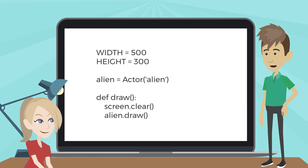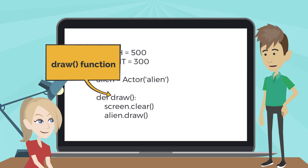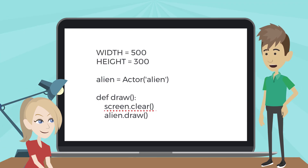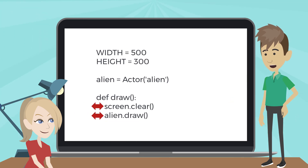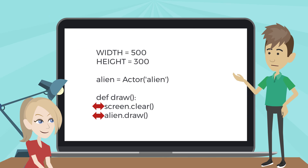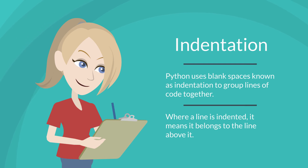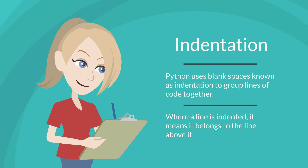What is this code doing? To draw the alien on the screen, we can use a built-in PyGame Zero function called the draw function. This clears the screen. This line draws the alien on the screen. Remember, we need four blank spaces here. Python uses blank spaces, known as indentation, to group lines of code together so the computer knows what to do next. Where a line is indented, it means it belongs to the line above it.